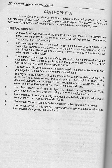Now, the general account of Xanthophyta. Number one: the majority of yellow-green algae are freshwater, but some species are aerial, growing on tree trunks, on damp walls, and soil on drying mud. A few species are marine, for example, Halosphira.